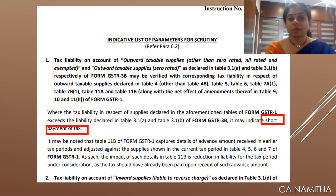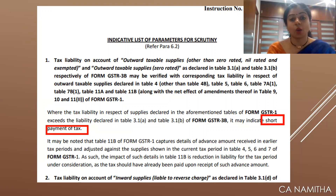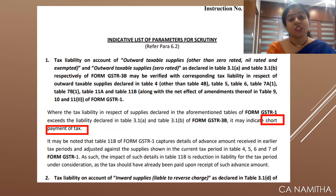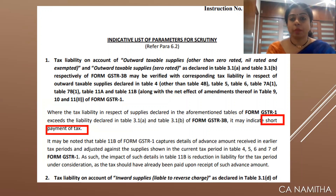The very first parameter is whenever there is a mismatch in the outward supply — that is, outward taxable supply — as declared in GSTR-1 and GSTR-3B, which further results in the short payment of taxes, it may invite a scrutiny notice.